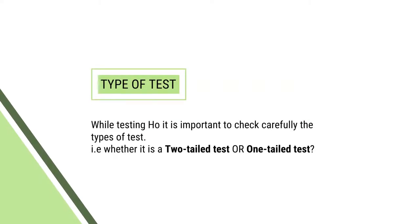Coming to the type of test: while testing a null hypothesis, it is important to carefully check the type of test — whether it is a two-tailed test or a one-tailed test. What is a one-tailed test? What is a two-tailed test? How is the one-tailed test different from the two-tailed test? We will discuss all of this comprehensively.